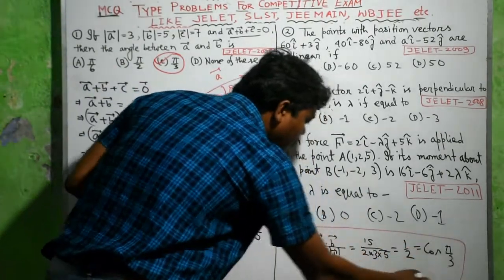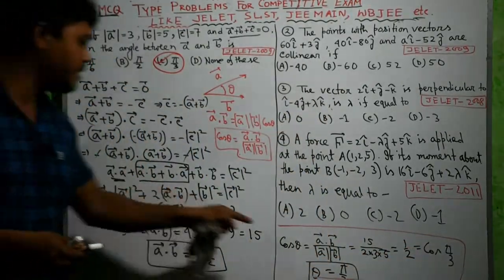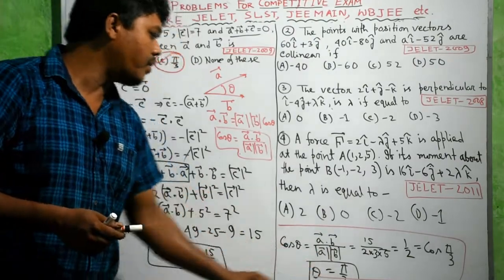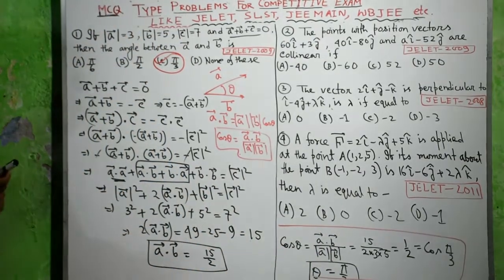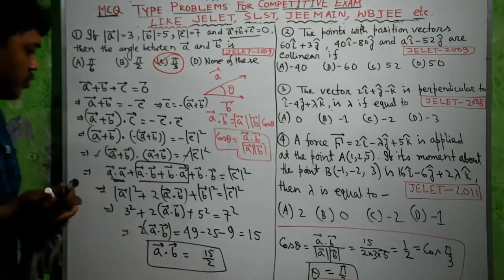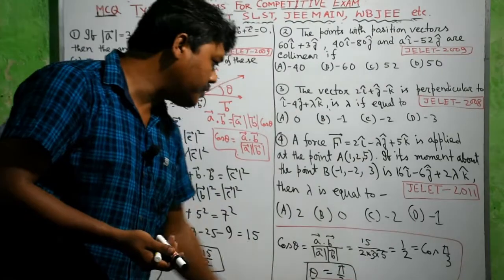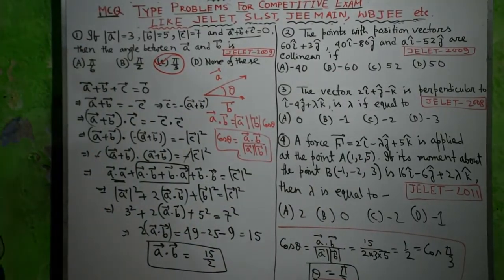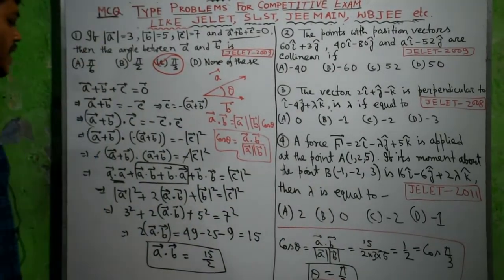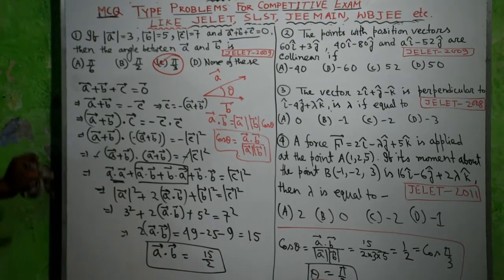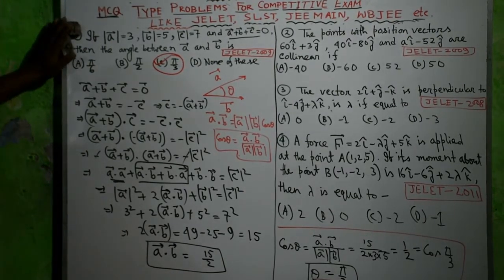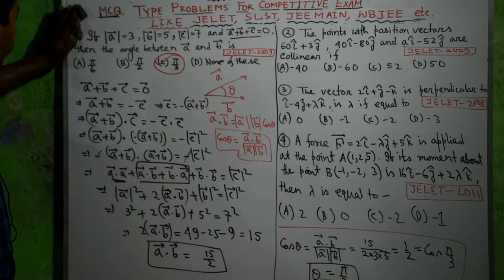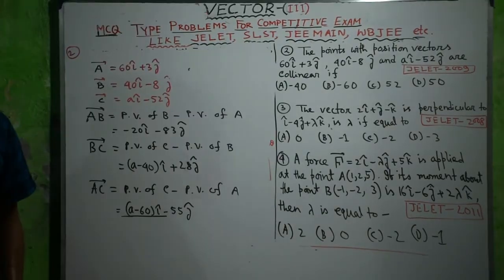To summarize: cosine theta equals A dot B divided by mod A times mod B. With A dot B equals 15/2, mod A equals 3, mod B equals 5, you get 1/2, which equals cos 60 degrees or cos pi by 3. Therefore theta equals pi by 3 — that is the angle between the two vectors A and B. Problem 1 is solved.